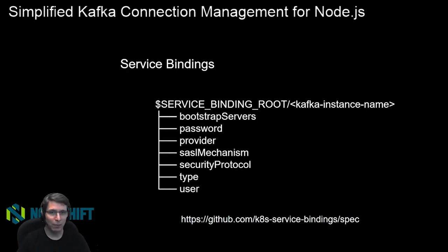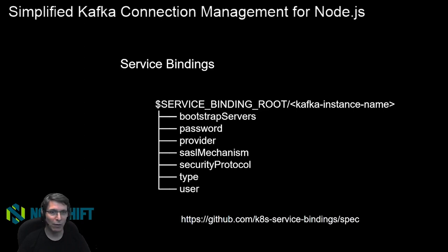Basically, they're mapped under a service binding root, and that one environment variable is added to your environment — that's how you figure out where the top of the tree is. Then you can go in there and get information like the password, bootstrap servers, SASL mechanism, and all that kind of information.